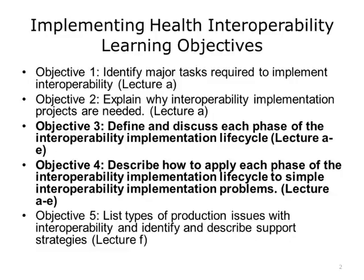This unit will cover the following learning objectives. Number one, identify major tasks required to implement interoperability. Number two, explain why interoperability implementation projects are needed. Number three, define and discuss each phase of the interoperability implementation life cycle. Number four, describe how to apply each phase of the interoperability implementation life cycle to simple interoperability implementation problems. And number five, list types of production issues with interoperability and identify and describe support strategies.